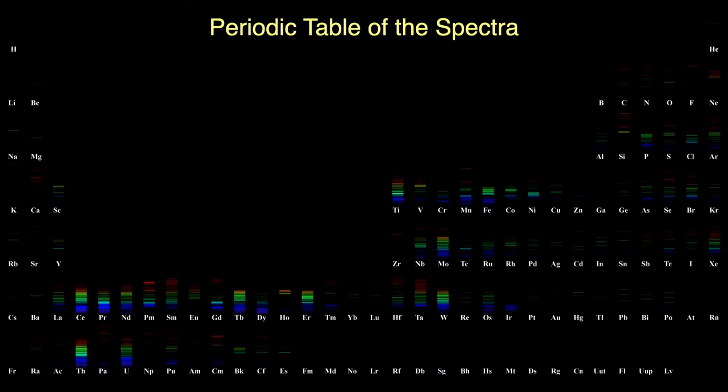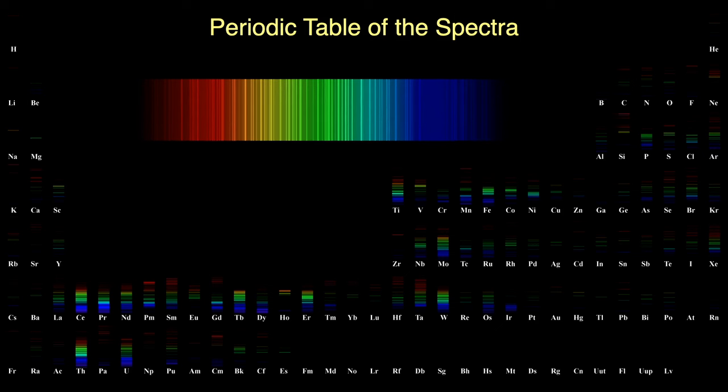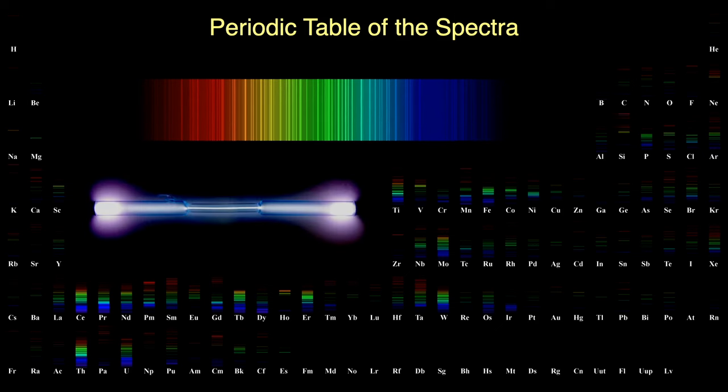Here's the periodic table of the spectra. Xenon has many emission lines across the spectrum. A glowing tube of xenon gas, therefore, looks purplish-white.